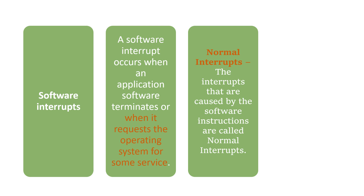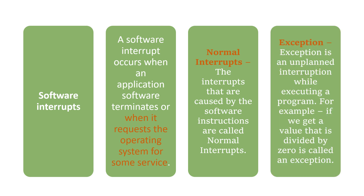Normal interrupts are caused by software instructions that ask for some service from the operating system. The next type is the exception. An exception is an unplanned interruption while executing a program. For example, if we get a value that is divided by zero, then it is known as an exception.